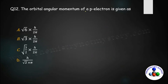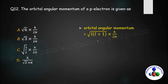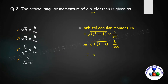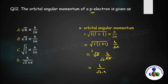Next question: the orbital angular momentum of a p electron is given as what? Orbital angular momentum is calculated using the formula √(l(l+1)) × h/2π. For p electrons, l=1, so you get √(1×2) × h/2π = √2 × h/2π, which simplifies to h/(√2 × π) — matching option D. So option D is the right answer.